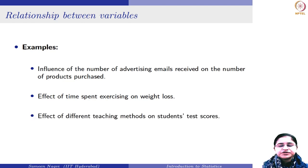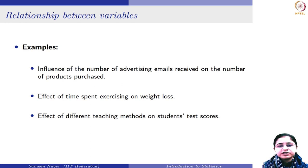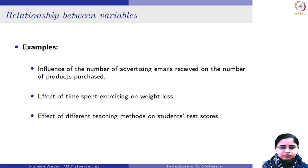Next, a school administration might be interested to see the effect of different teaching methods on students' test scores. Different teaching methods can be the traditional method, online tutorials, or hands-on workshops. Note that these categories are not in order — there is no inherent ordering present in these methods; you cannot say that one method is superior to another. So different teaching methods is basically your nominal variable, whereas the marks of the students is your discrete variable.